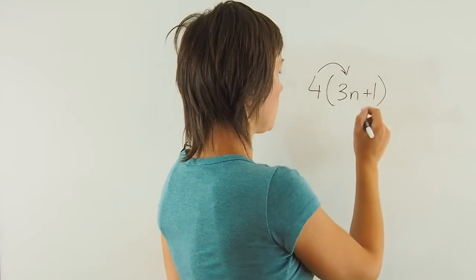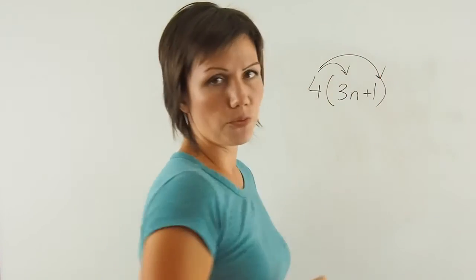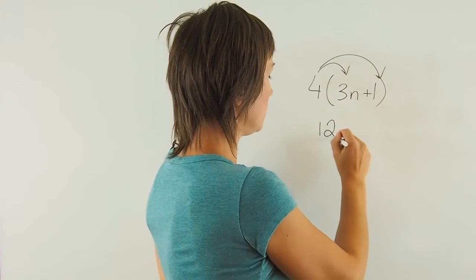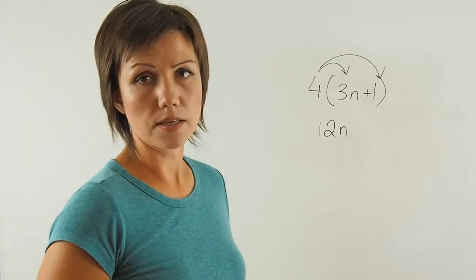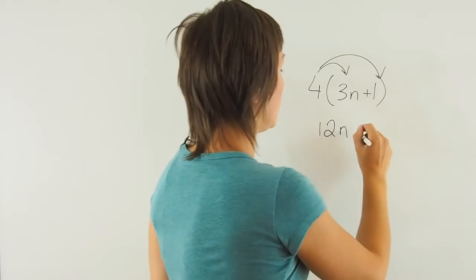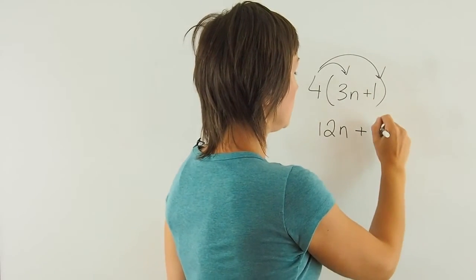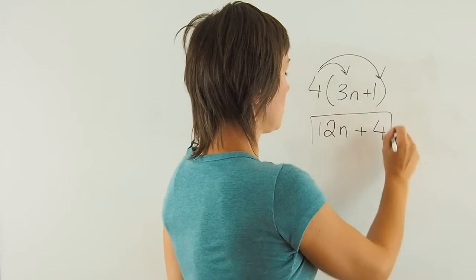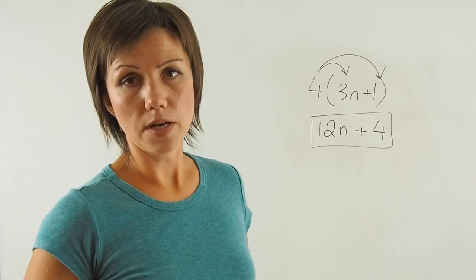So 4 times 3N, 4 times 1. 4 times 3 is 12, and N stays with the term. And then plus 4 times 1 is 4. And this is the simplified expression.